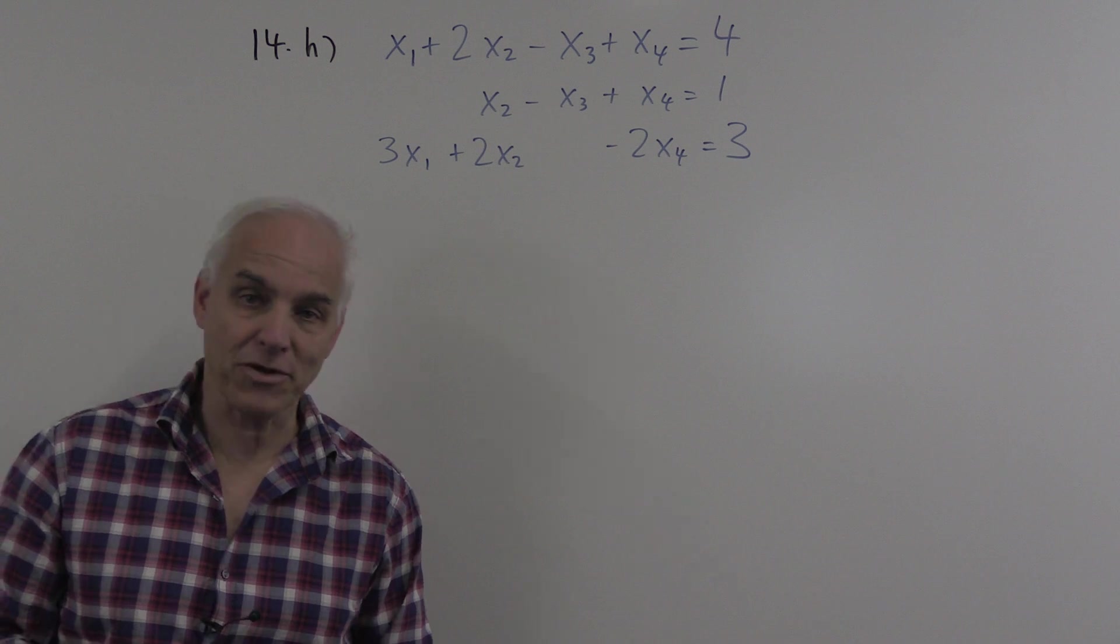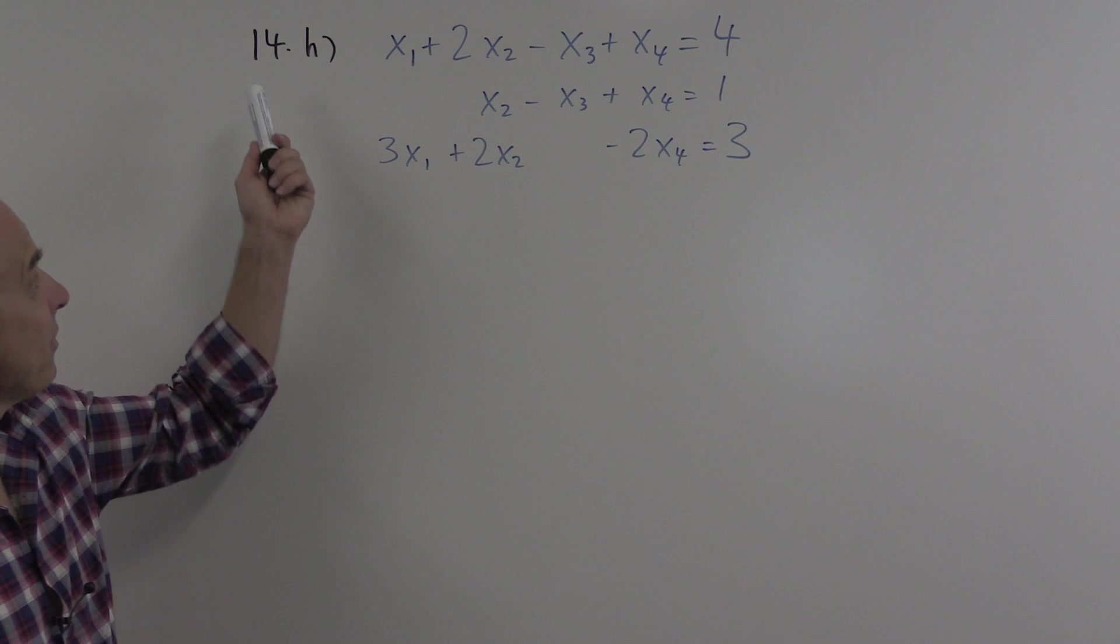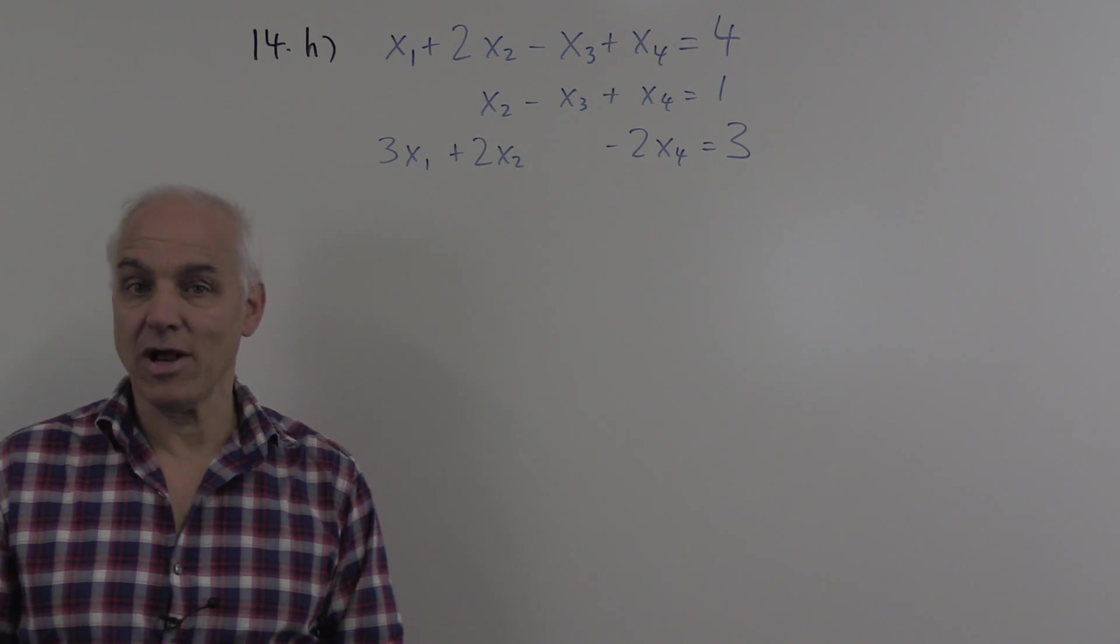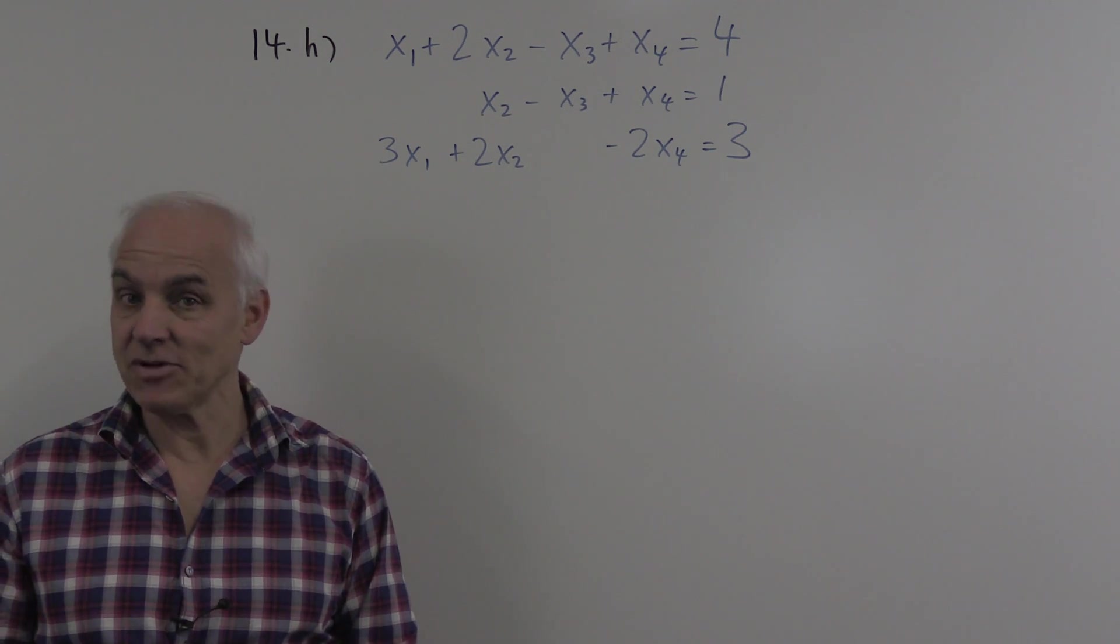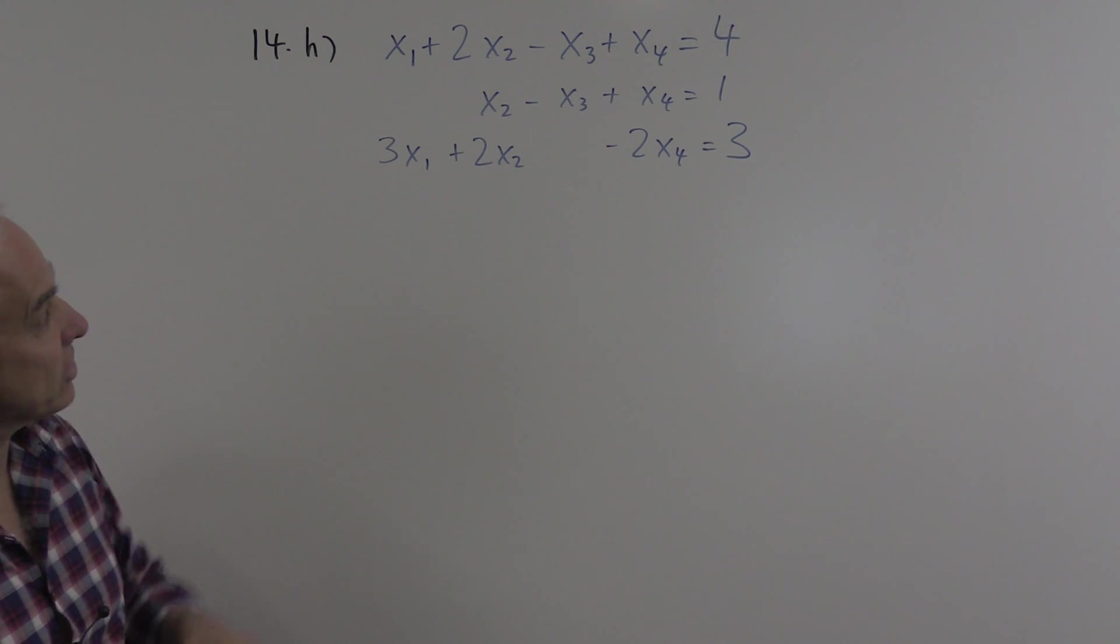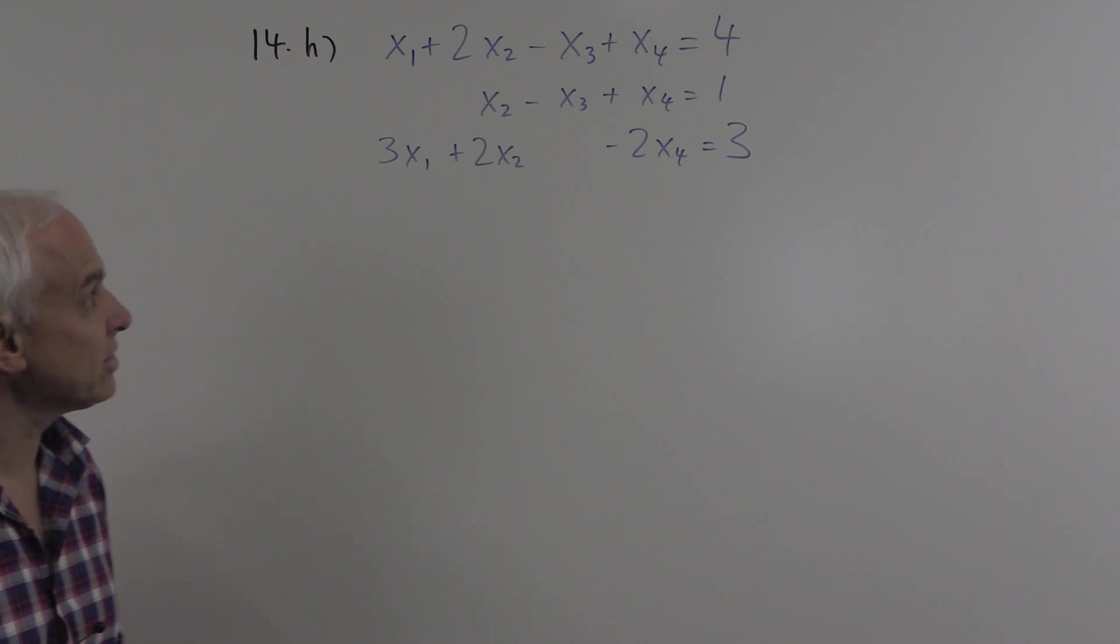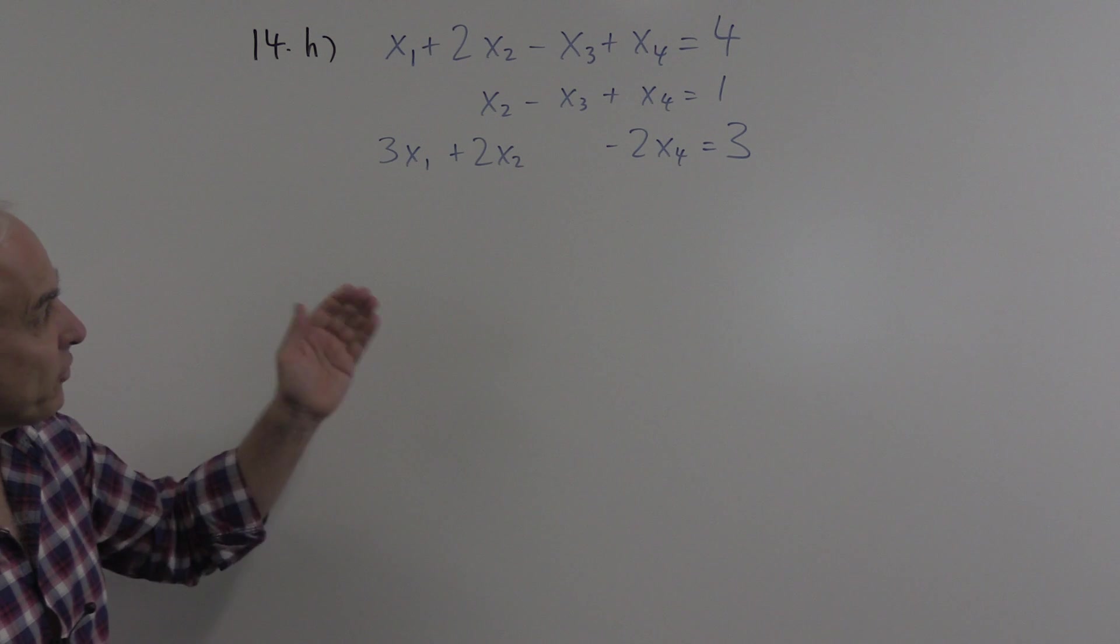Hi, I'm Norman Weilberger and we're here at the University of New South Wales. This is problem 14h in our linear algebra course chapter 4, and we're talking about linear equations here. Our aim is to solve this system of linear equations for x1, x2, x3, and x4. So we have three equations in four unknowns.